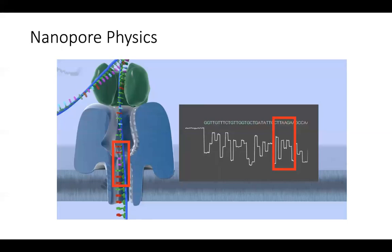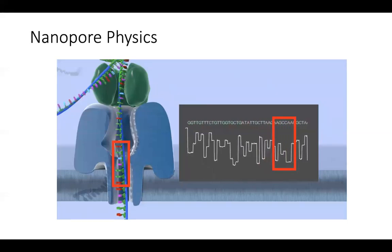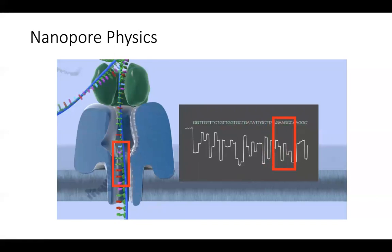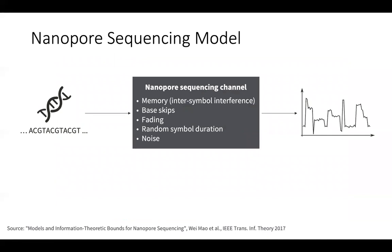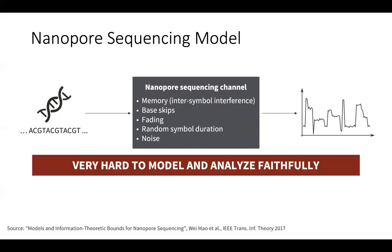To understand how we do this, we first need to understand nanopore sequencing itself. As the name suggests, it consists of a pore. The DNA passes through the pore, and as it passes, the current going through the pore changes and is recorded. The current depends on the number of bases inside the pore — not just one single base, but a sequence of bases. From a communications perspective, there is a lot of memory, something called inter-symbol interference, because many sequences contribute to each sample. Sometimes a base is skipped, sometimes the speed of DNA through the pore is not constant — causing synchronization issues — and finally there is noise. This makes it really hard to model and analyze properly.